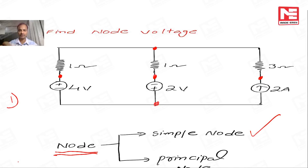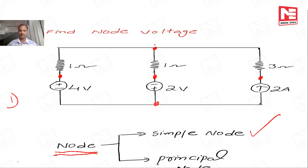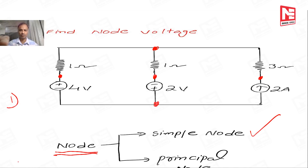In this example, one ohm, one ohm, and three ohms — these three are connected together, so it is called a principal node. In writing the KCL equation, every time we concentrate only on these principal nodes. At the principal node, current division is present.